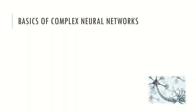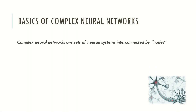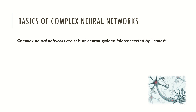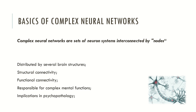Now let's talk about the basics of complex neural networks. Complex neural networks are sets of neural systems that are interconnected by nodes. Nodes connect different networks with other networks. Neuronal networks are distributed by several brain structures, giving them structural connectivity and functional connectivity, and these complex neural networks are responsible for complex mental functions.